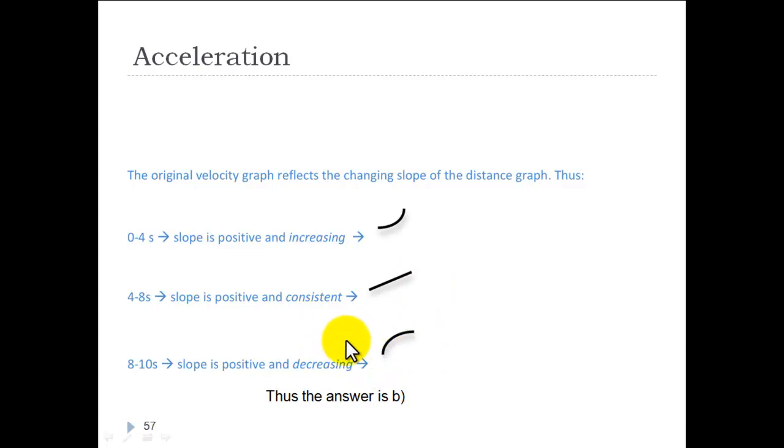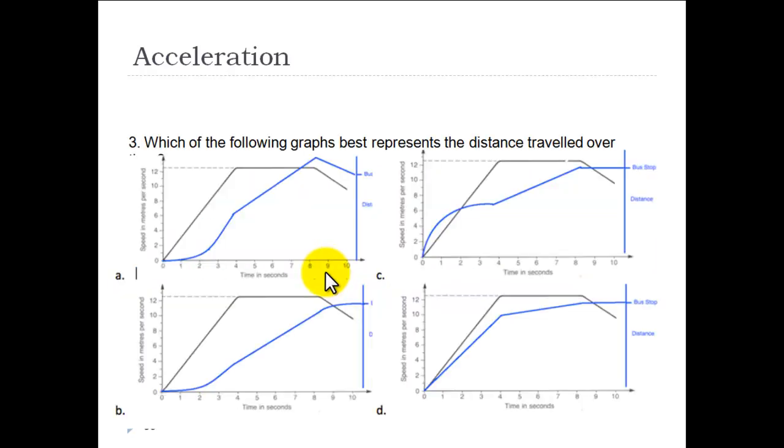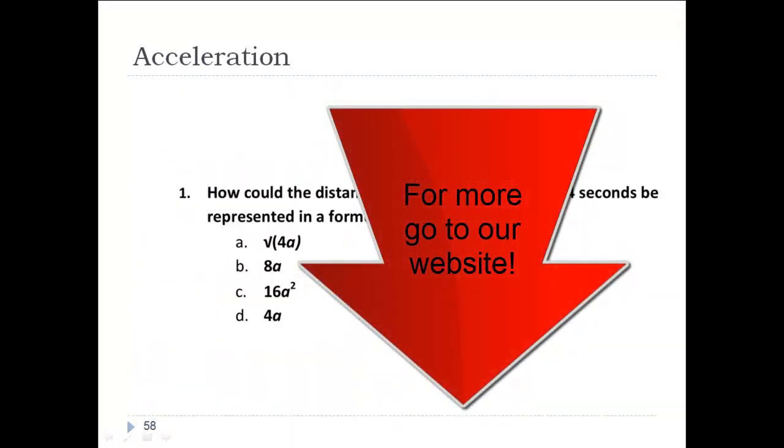That's what the distance over time will look like. The answer then is B. If we go back here to look at it, B has a slope that is increasing and then it's positive, but it stays the same. He's always getting further away from home. And then towards the bus stop, Tom slows down. He's still getting close to the bus stop, but the slope is getting flatter. It's getting smaller. Did you get that one? I hope you did.